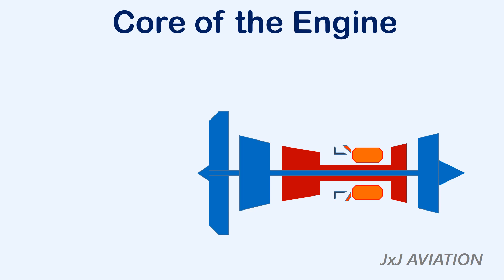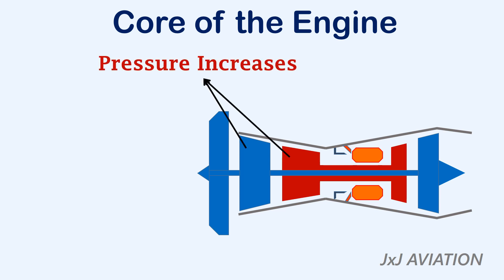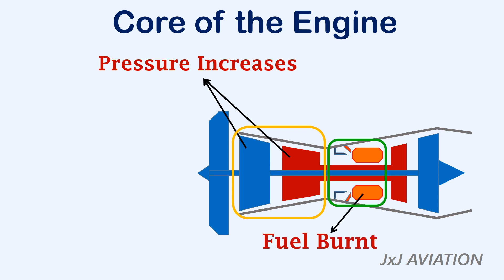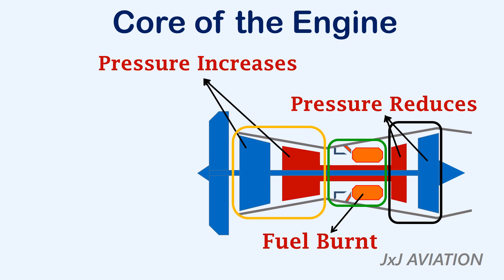These components together are called the core of the turbofan engine. As air enters the core, its pressure increases as it passes through the low pressure and high pressure compressor stages, which improves the combustion process. Inside the combustion chamber, fuel is introduced, mixed with incoming air, and burnt with the help of igniters, increasing pressure and temperature. The hot gases then enter the turbine stages where pressure reduces; as they expand through the high pressure and low pressure turbines they rotate, driving the compressors. The gases expand further in the nozzle section, increasing exhaust speed and creating thrust.